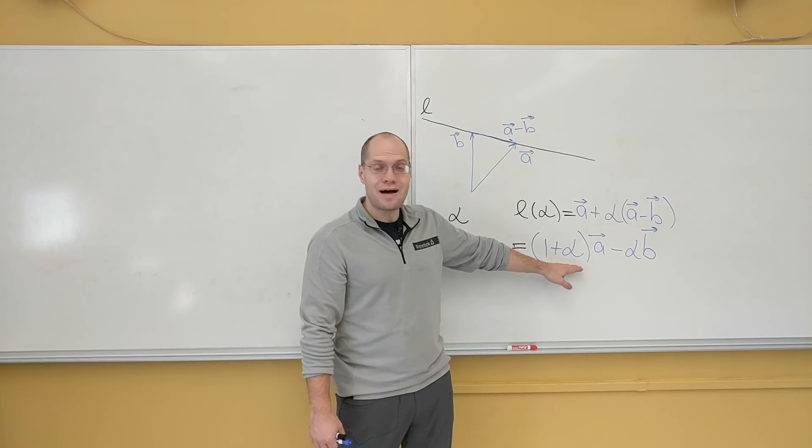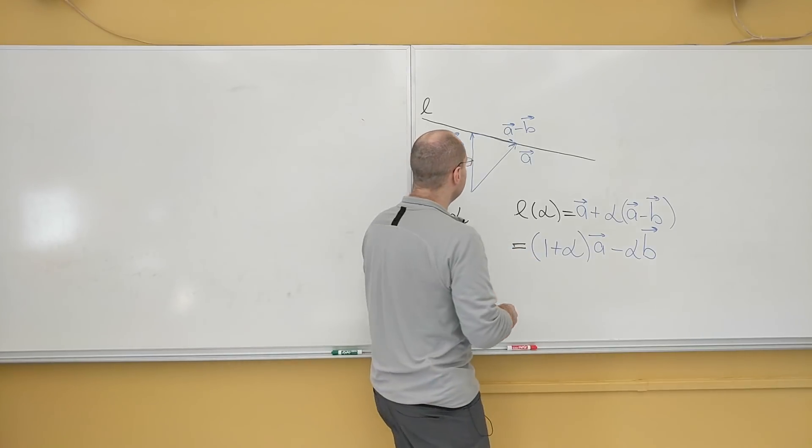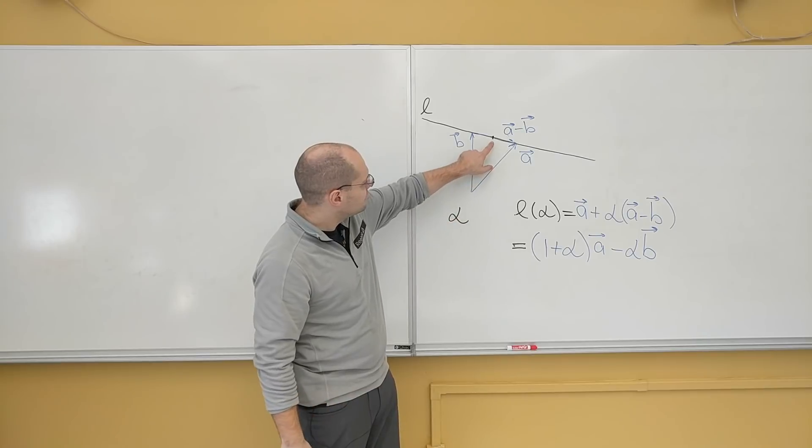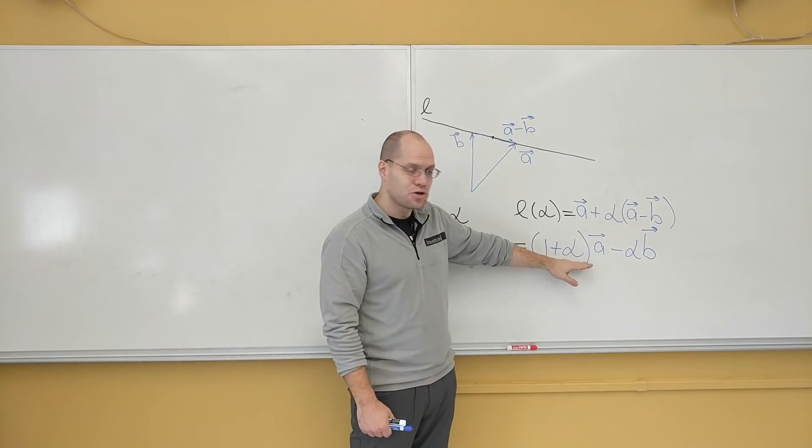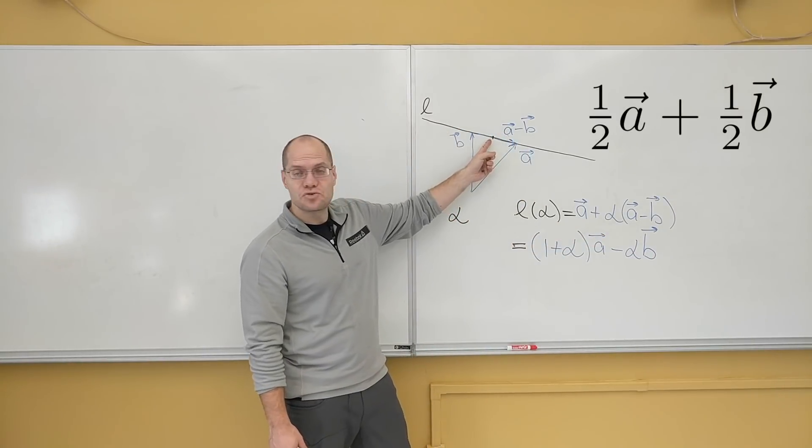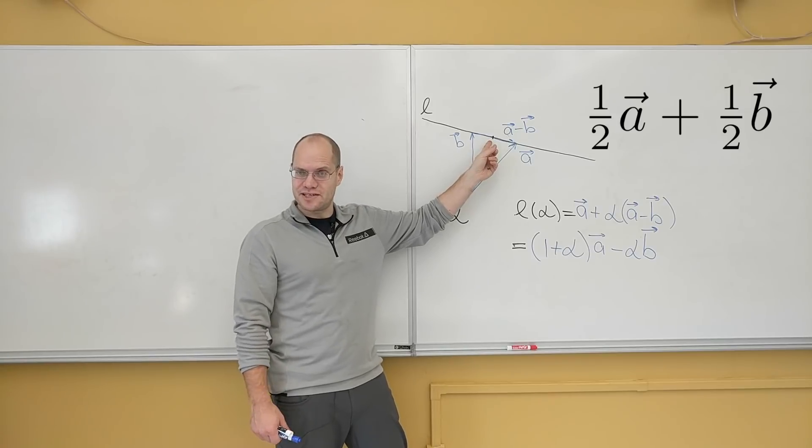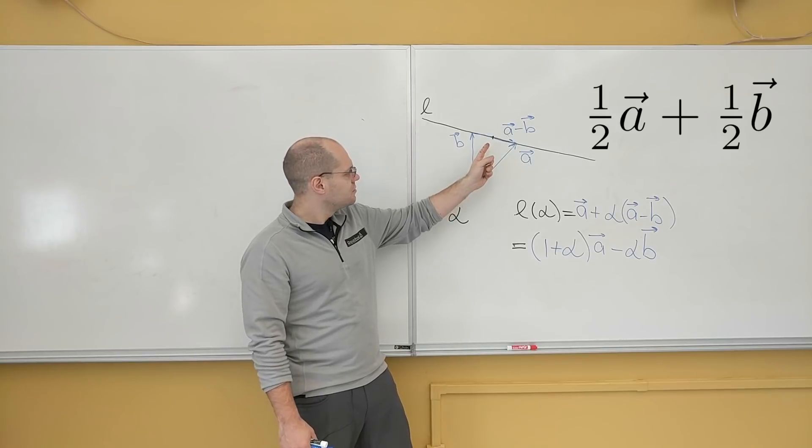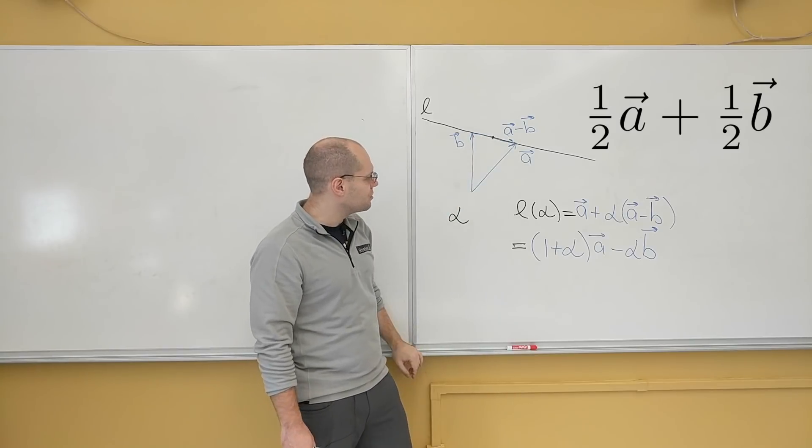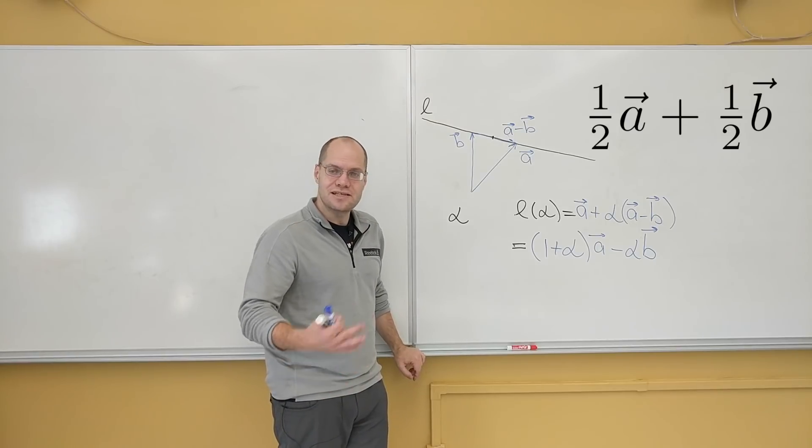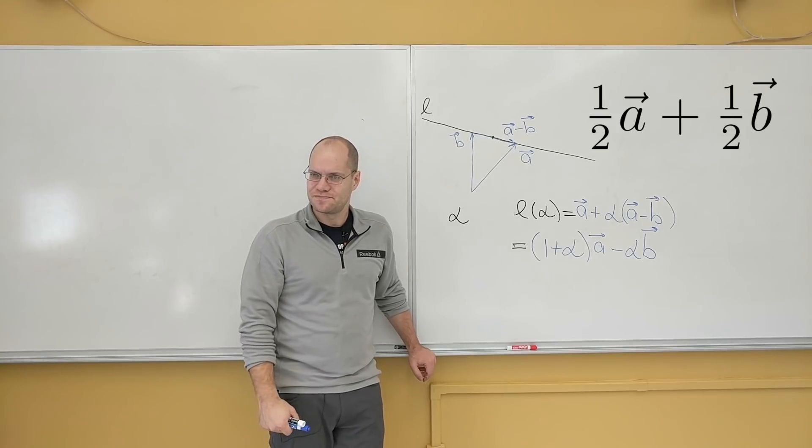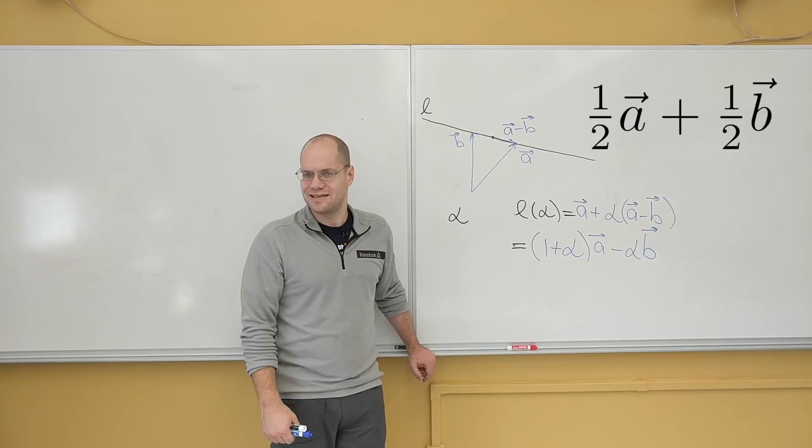And if we take alpha equals minus 1 half, which puts us here. Remember, this will be important for your homework. This corresponds to alpha equals minus 1 half. Then this coefficient is 1 half, and this coefficient is 1 half. So 1 half A plus 1 half B is right in the middle here. That's another important takeaway that will help you on your homework. That to find the midpoint, the mathematical expression for midpoint between two points, in vector terms, is A plus B over 2. Makes total sense. The midpoint is the average. How much more algebraically intuitive can it get? It's wonderful.